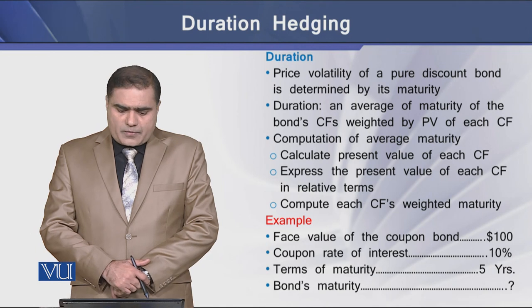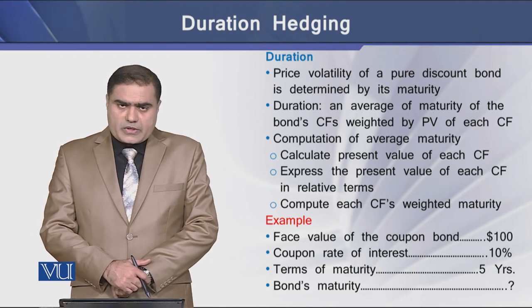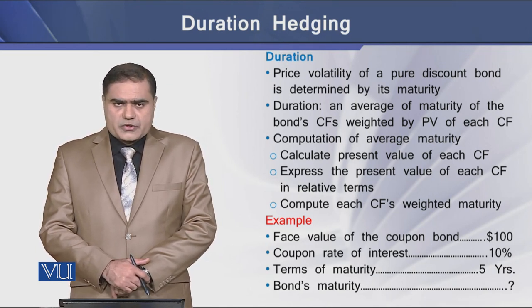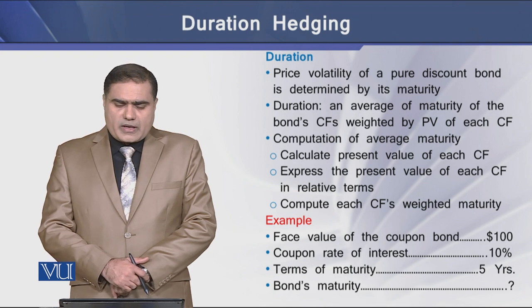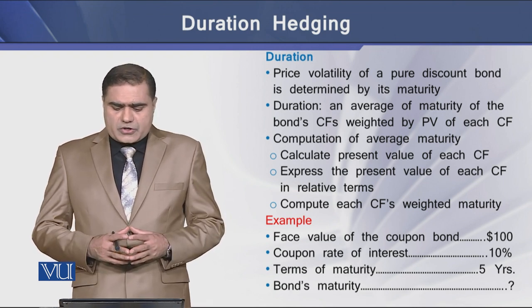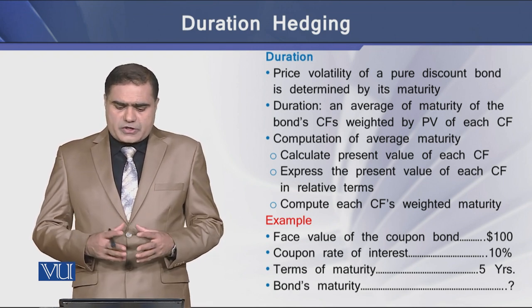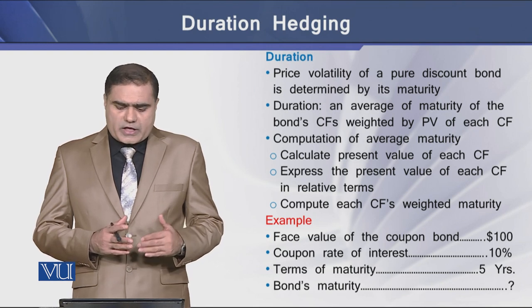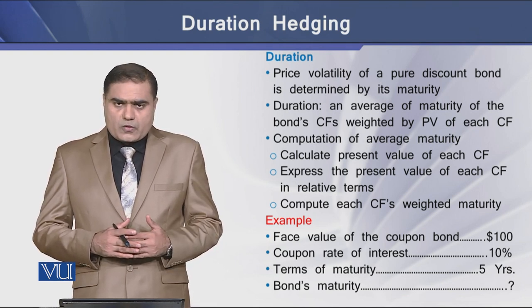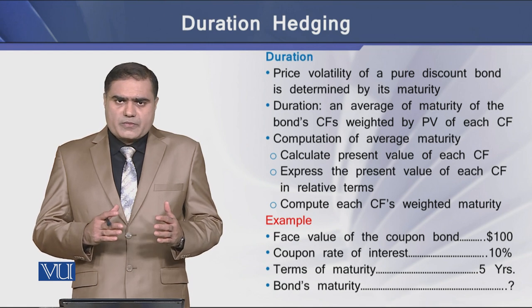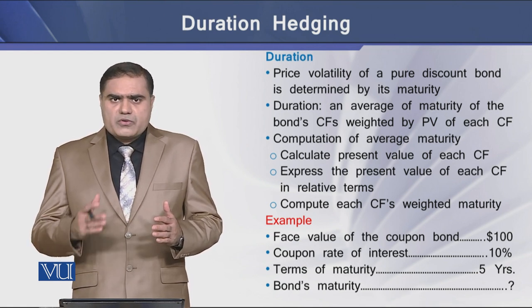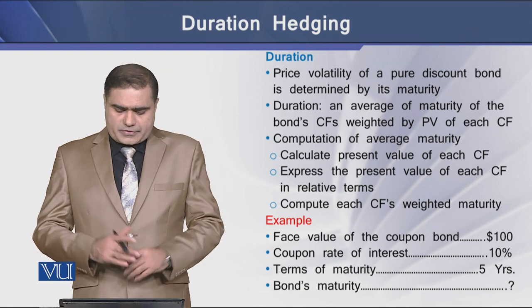The price volatility of a pure discount bond is generally determined by its maturity. By duration we mean an average maturity of the bond's cash flows, weighted by the present value of each individual periodic cash flow of the bond.